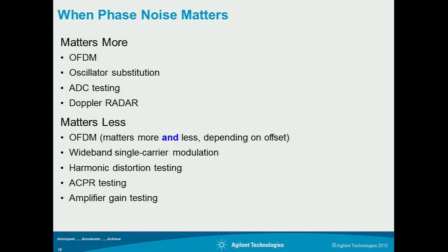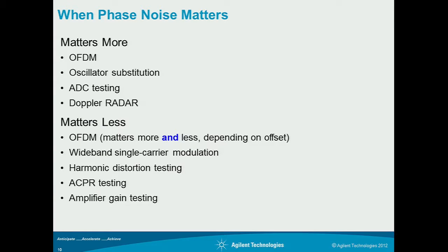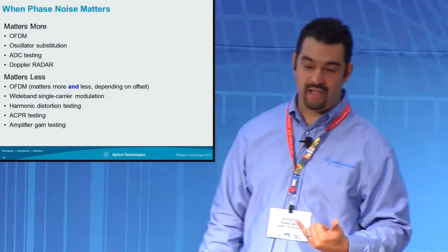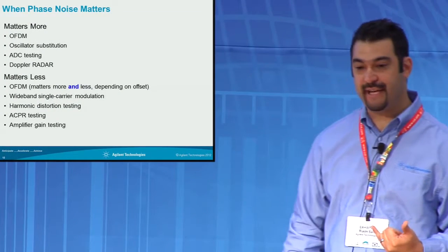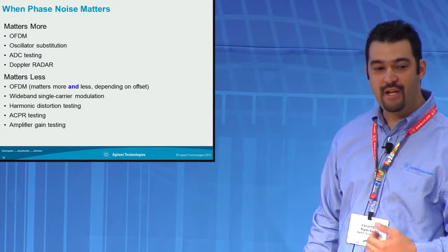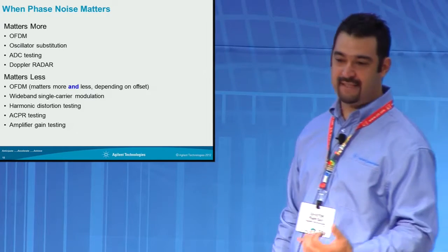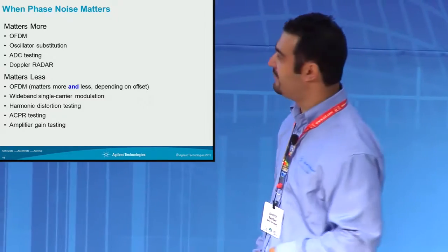You have oscillator substitution — usually you want a very clean oscillator so you know it's not contributing to your measurements. Folks working on ADCs — analog to digital converters — trying to get the best signal to noise ratio, any jitter on their clocks or analog signals used to characterize those devices could affect the sensitivity characterization.